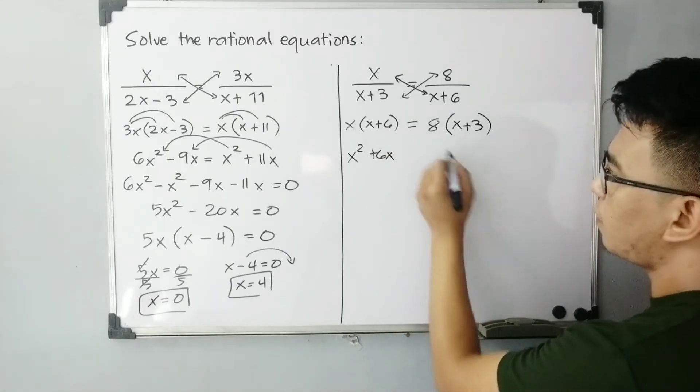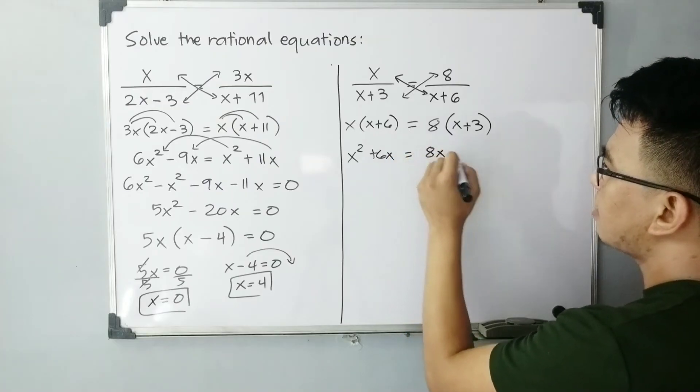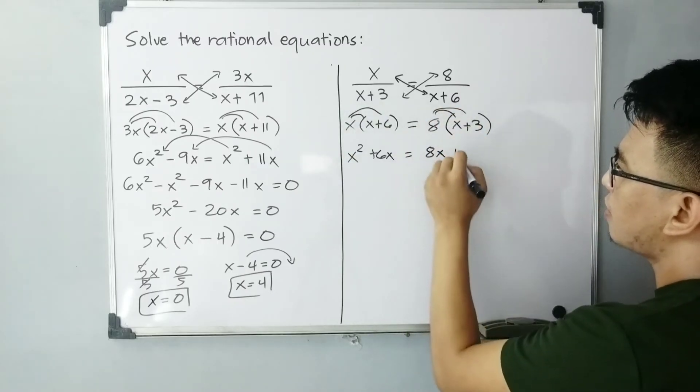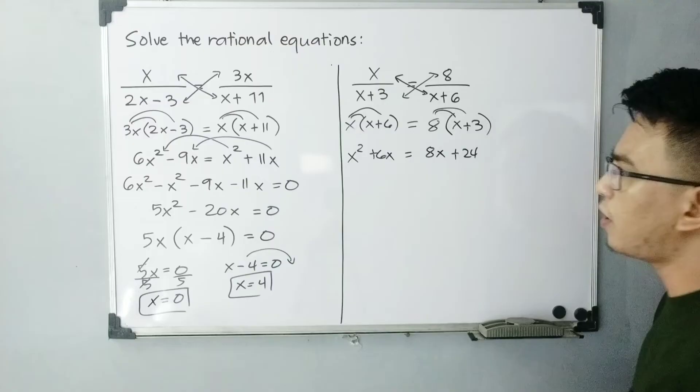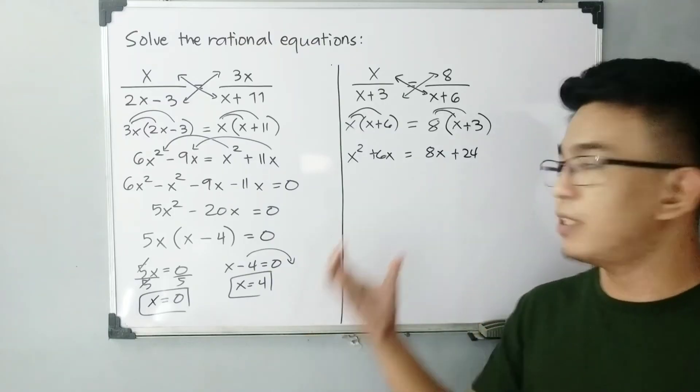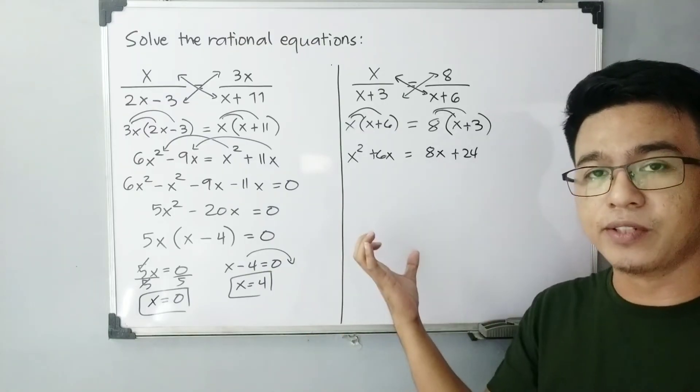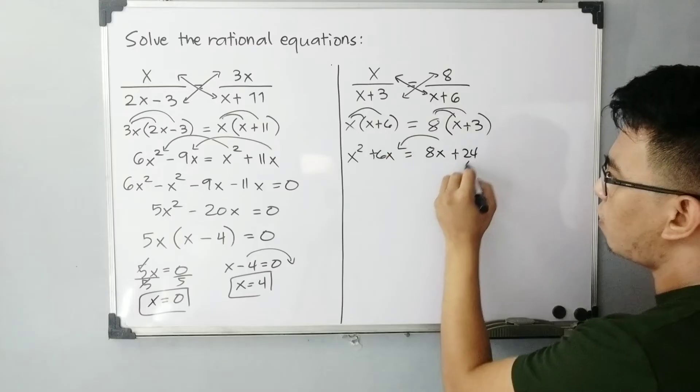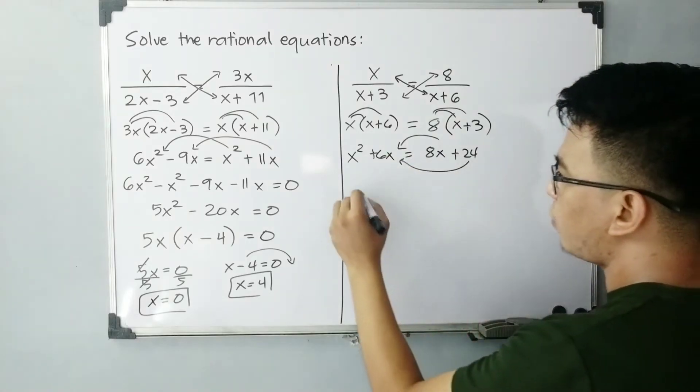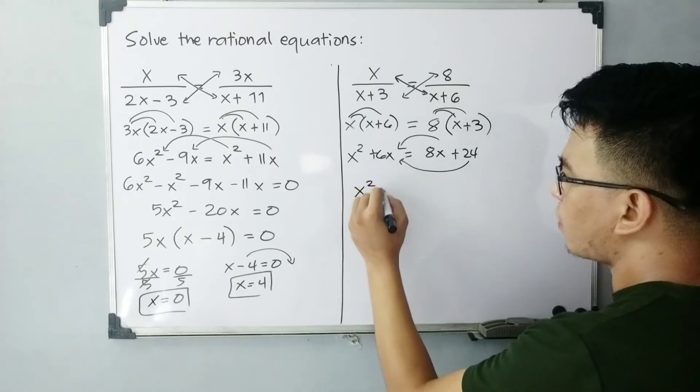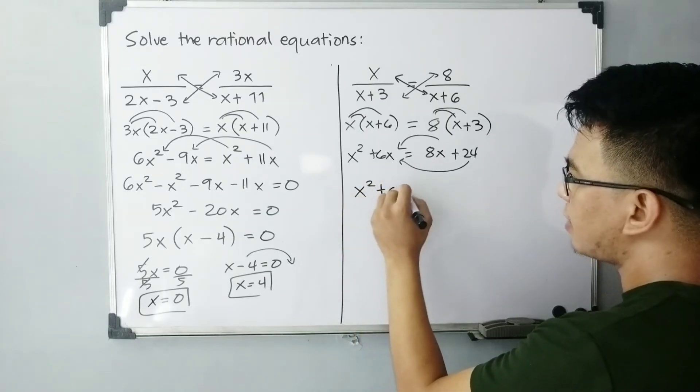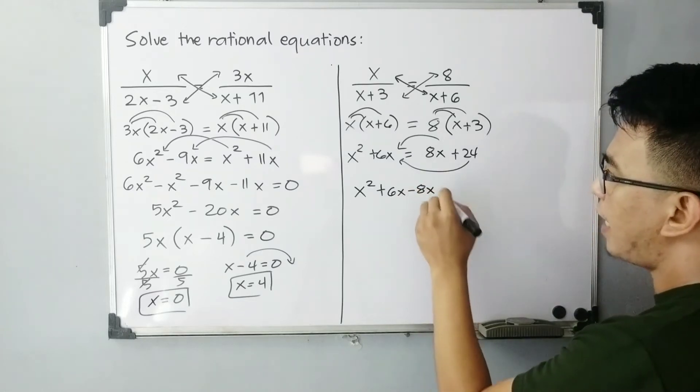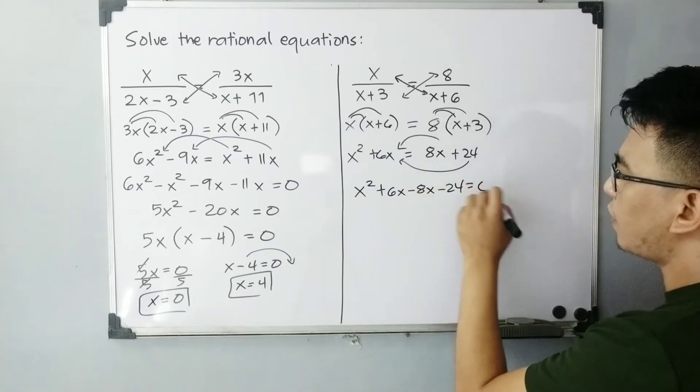Then this one, 8x plus 24. So we need to transform this quadratic equation in standard form. Transpose to the other side and then also we will transpose this.